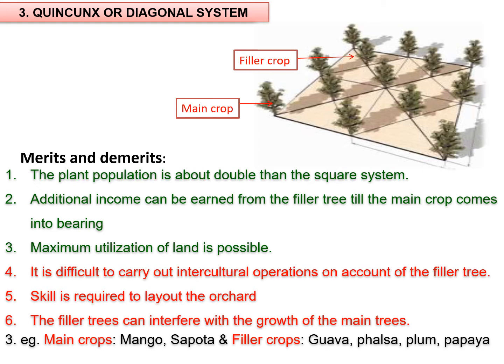A few disadvantages of the quincunx system: it is difficult to carry out intercultural operations due to the filler tree, skill is required to lay out the orchard, and the filler tree can interfere with the growth of the main trees, especially if it cannot be cut after the main plant has fully grown. For example, if mango or sapota is the main crop, filler crops may include guava, falsa, plum, or papaya.